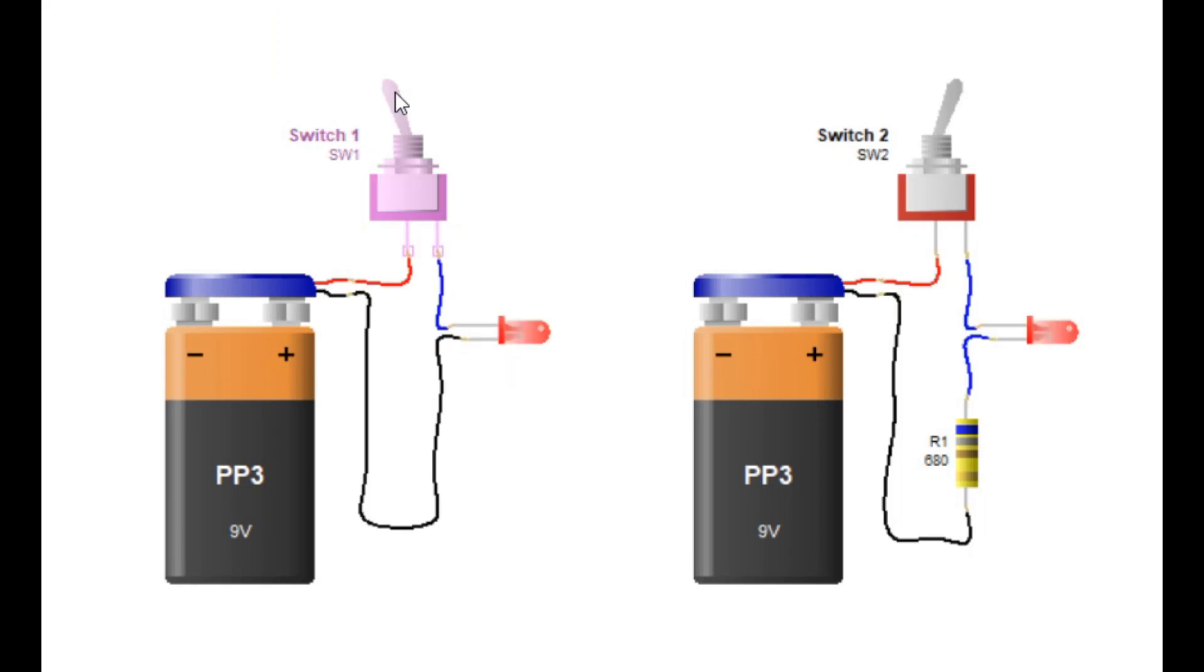Understanding the role of a resistor in limiting current to a diode. Today, let's talk about why a resistor is so important when connecting a diode or an LED to a power source. We'll also explore what can happen if you don't use one.